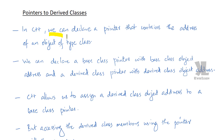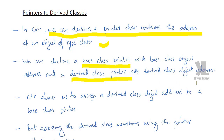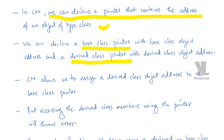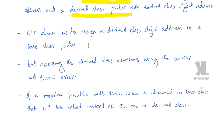We can declare a pointer that can hold the address of an object of type class. We can declare a base class pointer with a base class object address and a derived class pointer with a derived class object address. We will declare a base class pointer. Now in C++, we can declare a pointer to the base class pointer.